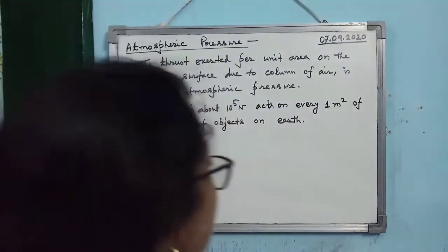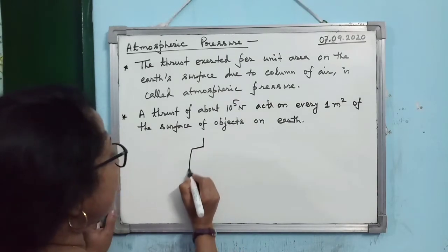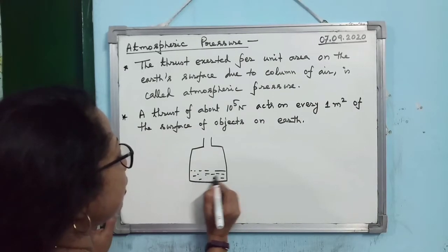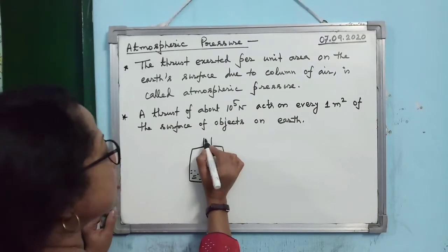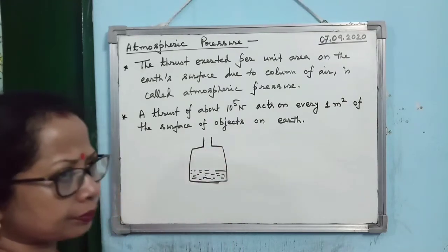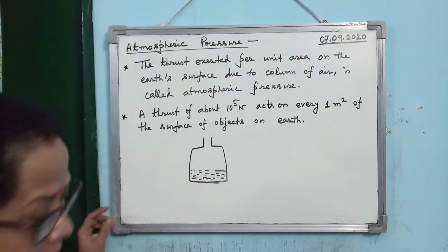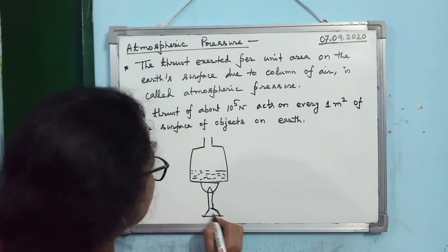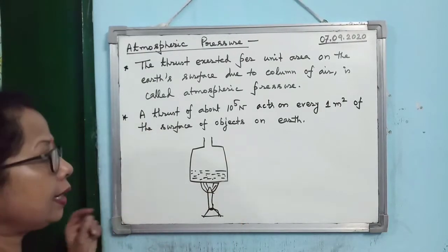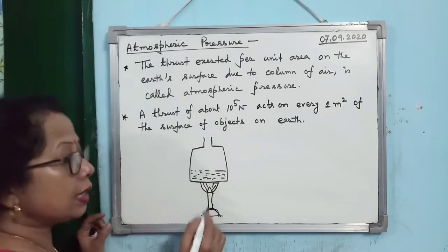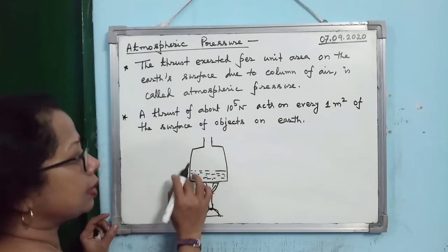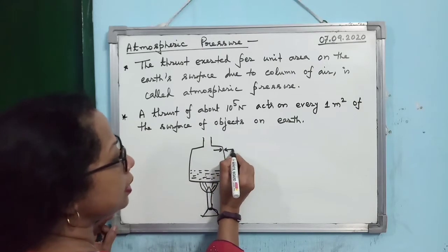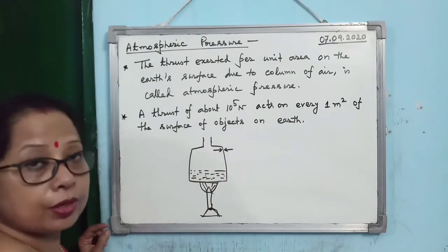Take a tin partially filled with water and heat it using a Bunsen burner. Water vapour will be produced. Initially, the tin is not deformed — meaning pressure inside and outside are equal. The confined air inside exerts pressure, and the atmosphere outside exerts pressure. These two pressures are equal, so no deformation occurs.